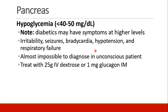Hypoglycemia occurs at a serum level of 40 to 50 milligrams per deciliter or below. Diabetics and other patients with chronic hyperglycemia may experience symptoms of hypoglycemia at higher levels. Symptoms include irritability, seizures, bradycardia, hypotension, and respiratory failure. In an unconscious patient, it is very hard to diagnose hypoglycemia unless you check the blood sugar — which applies to almost all of our anesthetized patients.